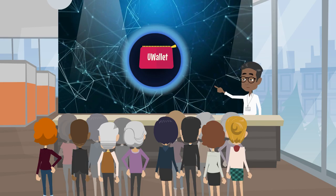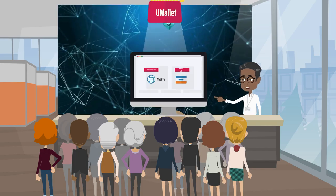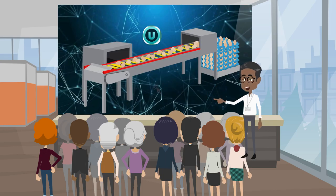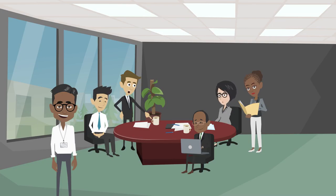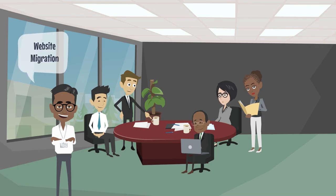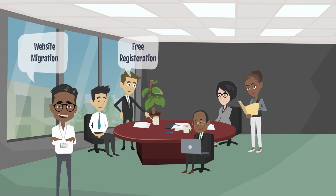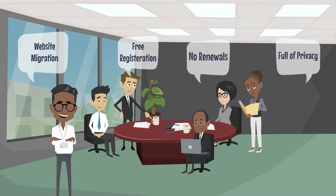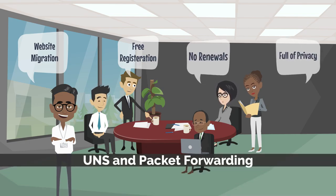You can use Kryptons for Utopia services like website registration, and you can also make your card and send it to everyone. You can create mining boards to increase mining capacity. You can migrate an existing website or register a new website for free — no renewals, full privacy. You can do this on Utopia through its UNS and packet forwarding features.